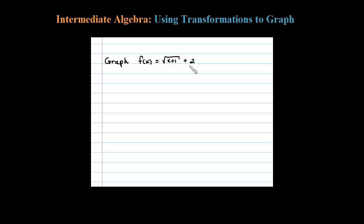Here we're asked to graph this square root function. Let's use our translation method. The first thing is to identify the basic graph, and that is the square root of X. We know what that looks like.